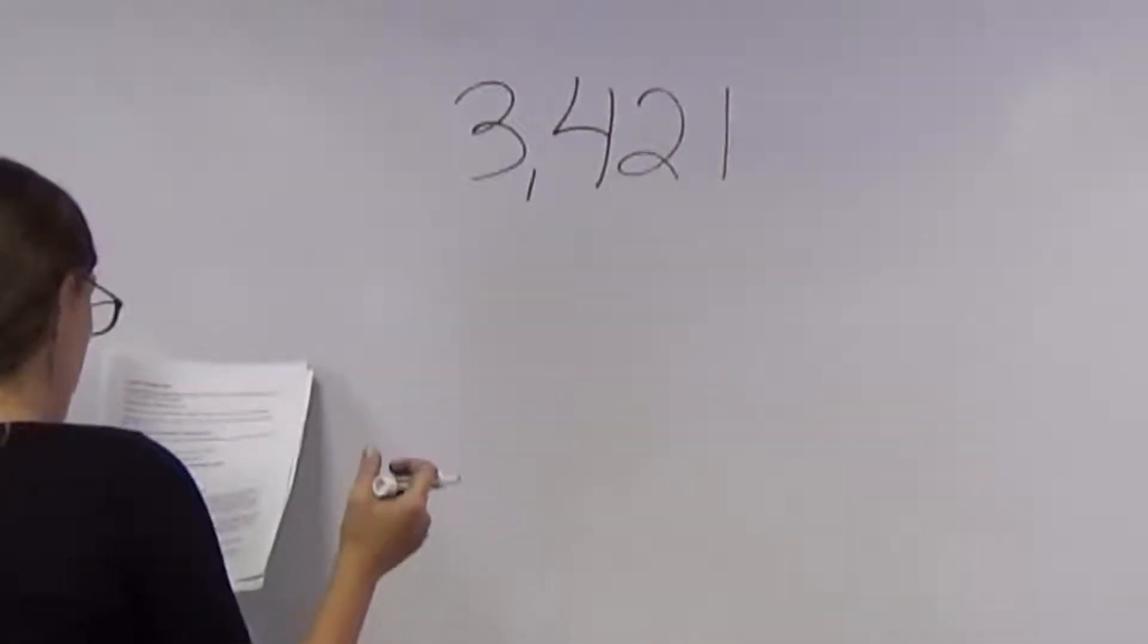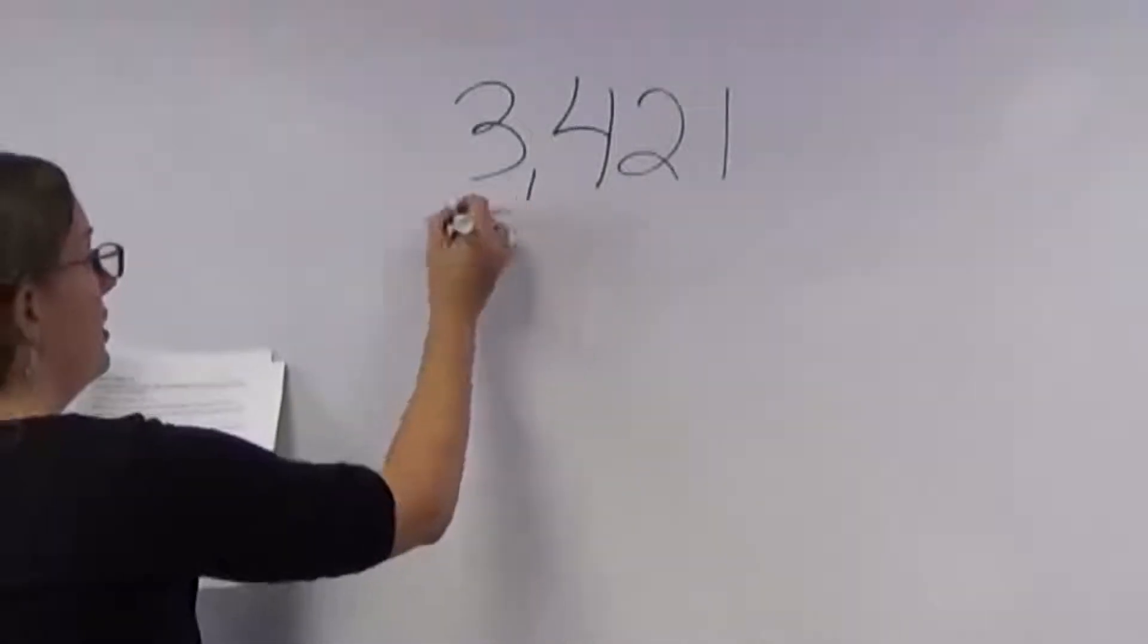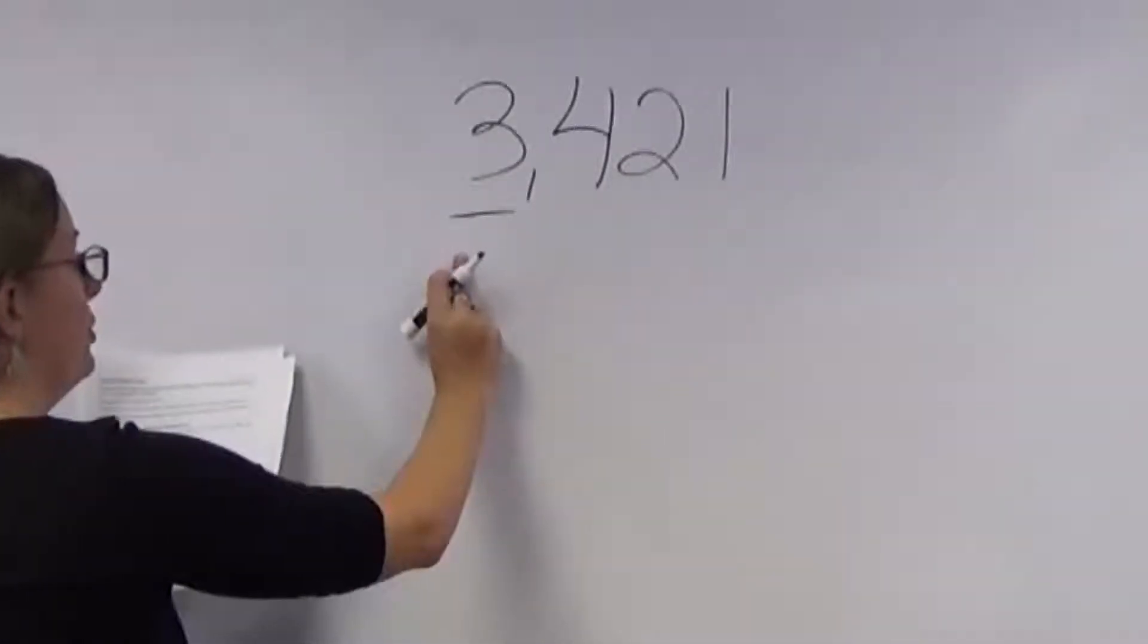So if the digit to the right of the thousands place, if this is the thousands place, we have a three in the thousands place,